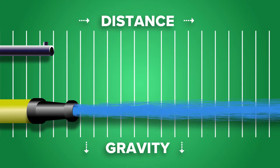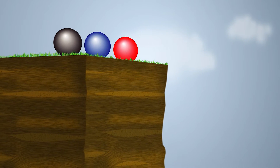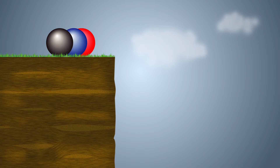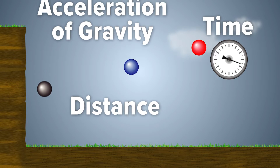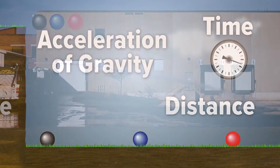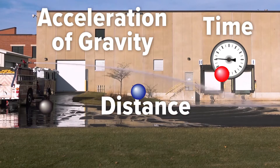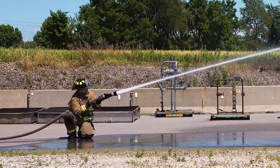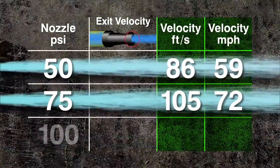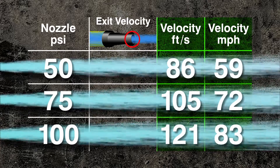The instant water exits a nozzle, or a bullet exits a gun, they start to fall. The time it takes to hit the ground is the same no matter the exit speed. Therefore, the distance traveled relies only on the speed available to cover distance until they fall. Remember, video number two in this series taught us that nozzle pressure is equal to the velocity of the stream as it leaves the nozzle.